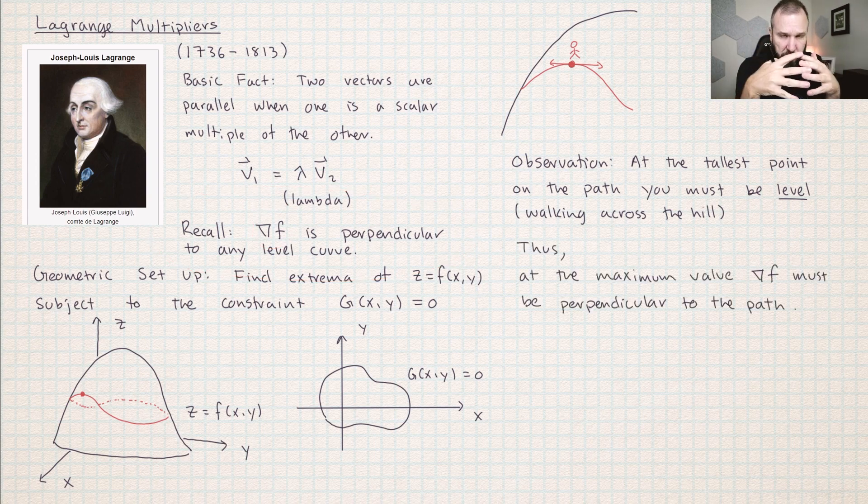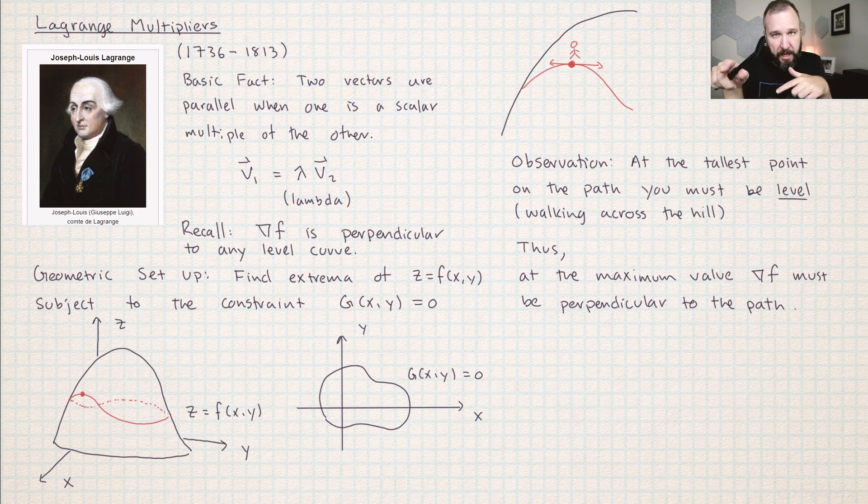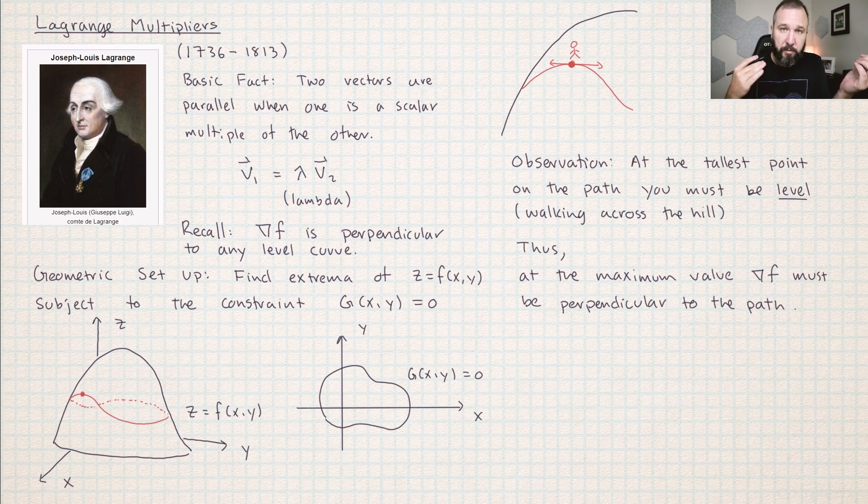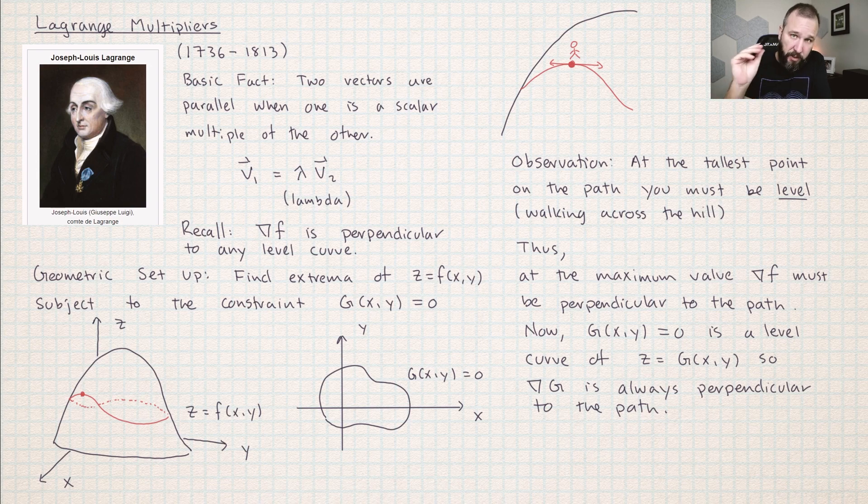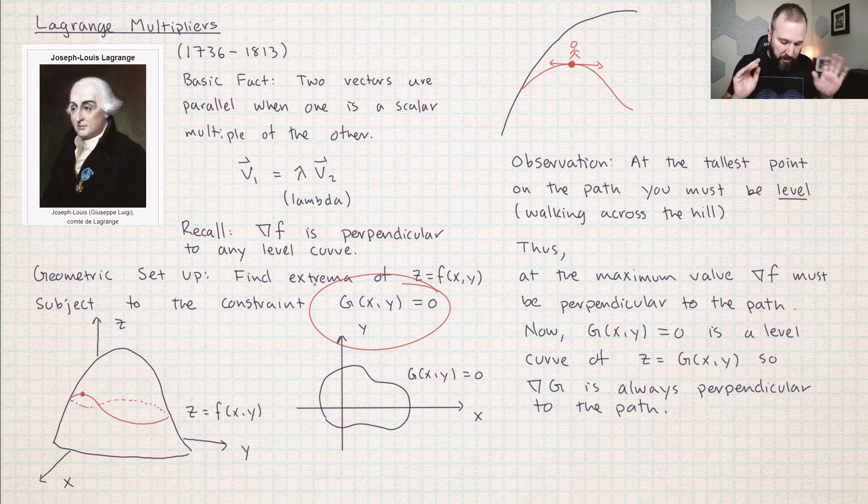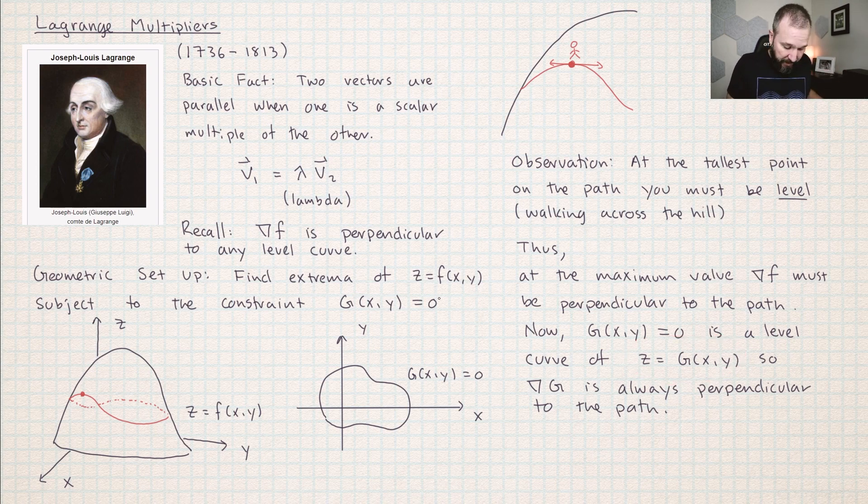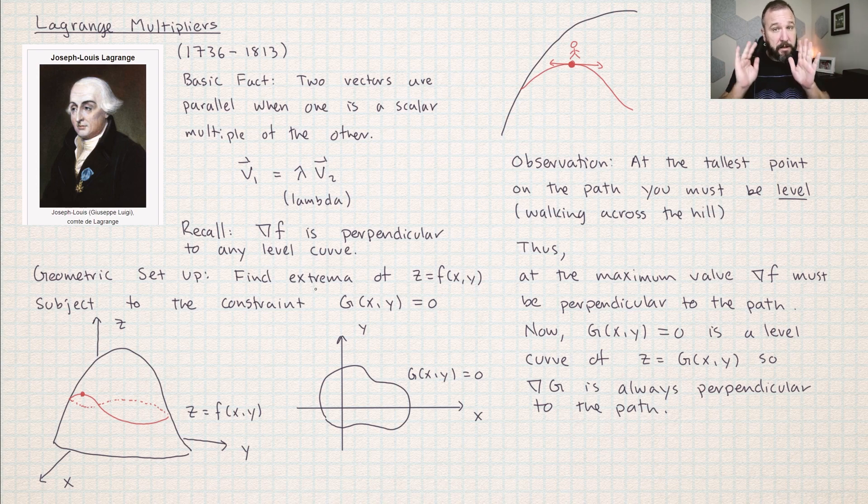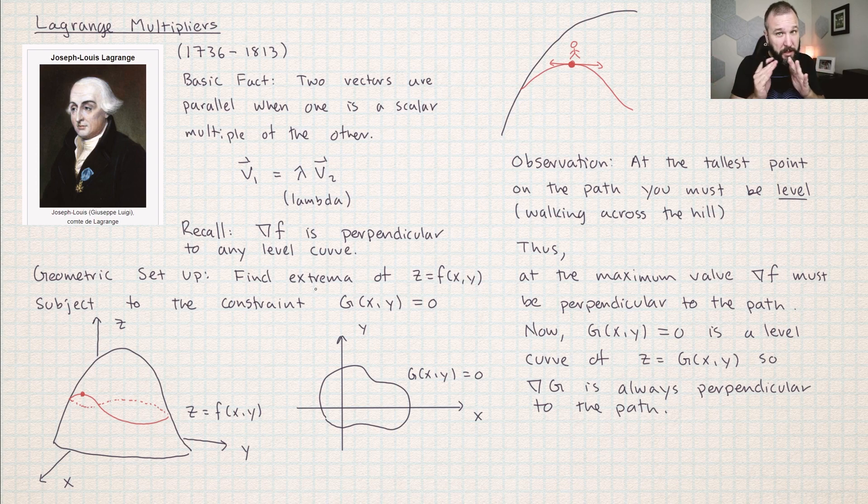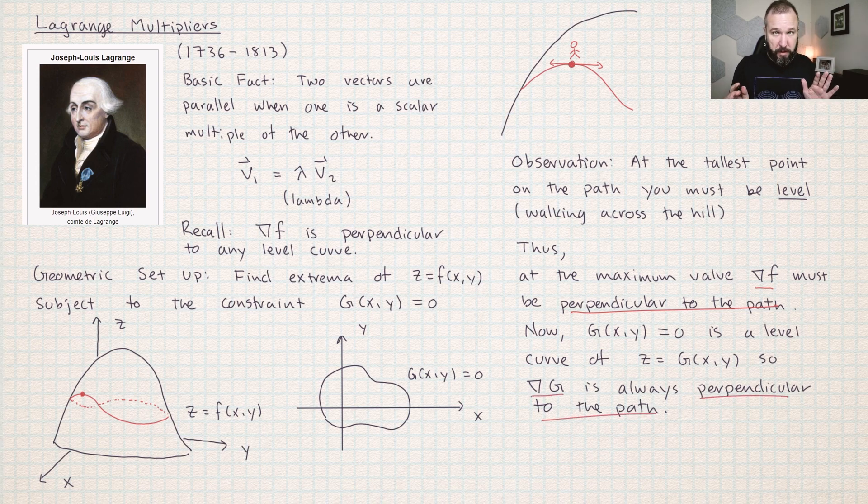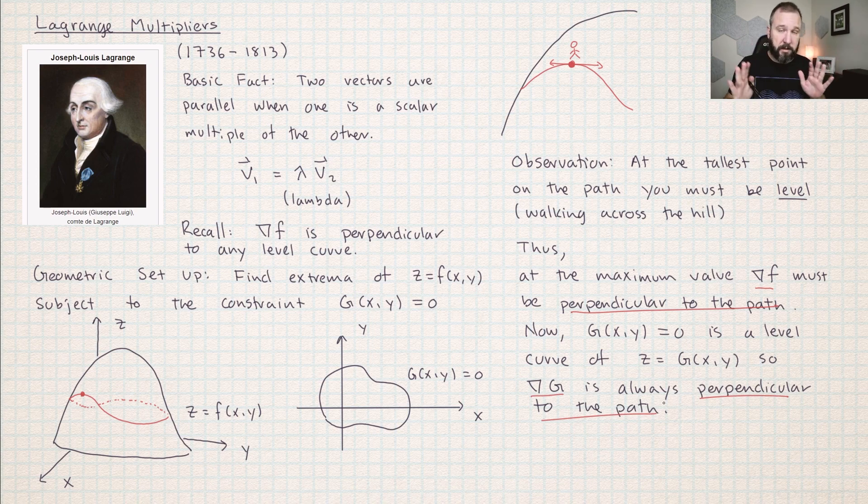So we're getting really close to having this whole thing set up. At the tallest point on the path, it must be level, and gradients are always perpendicular to level things. So at the maximum value, the gradient of f must be perpendicular to the path. The gradient of g is always perpendicular to the path. So let's put those two things together, and that's it. That is the method of Lagrange multipliers.